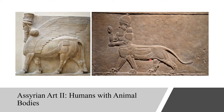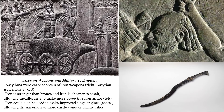One of the reasons the Assyrians were so militarily powerful came from their early adoption of iron weapons. Here on the right-hand side you can see an Assyrian sickle sword. Iron is stronger than bronze, and it's also cheaper and easier to smelt, allowing metallurgists to make better swords, spears, and also better armor that offers more coverage.